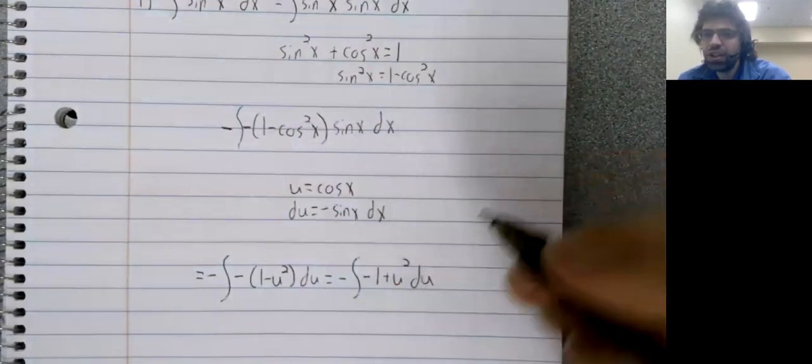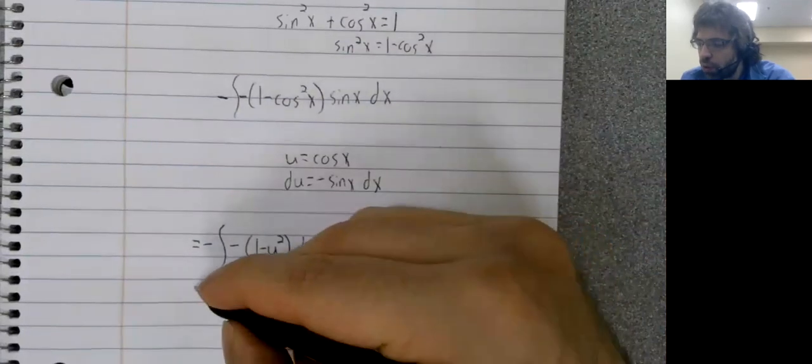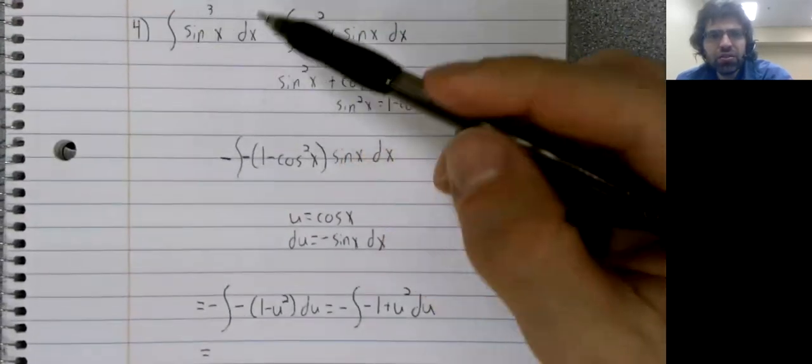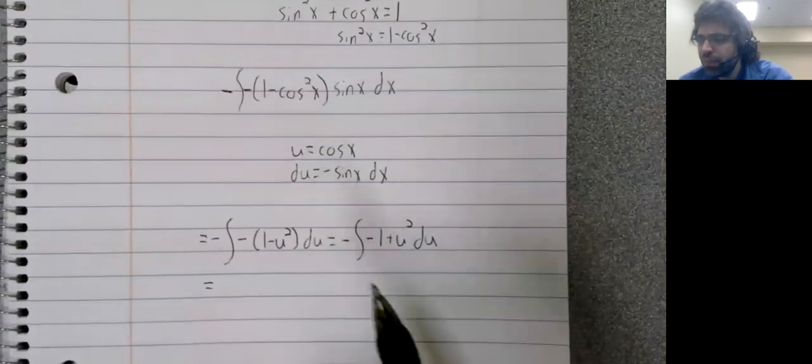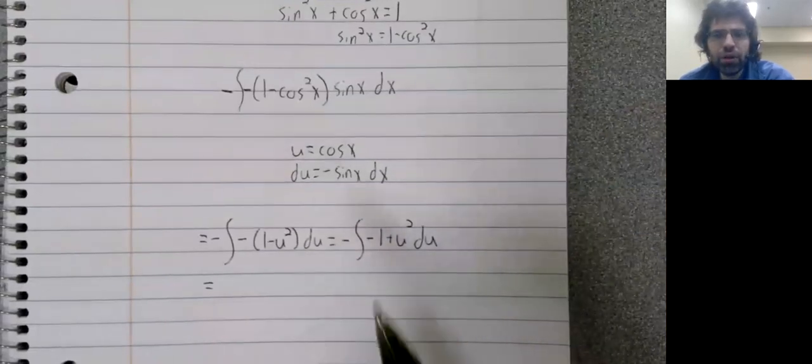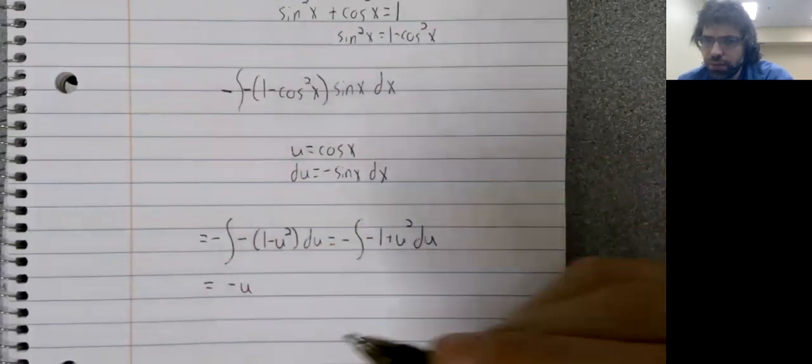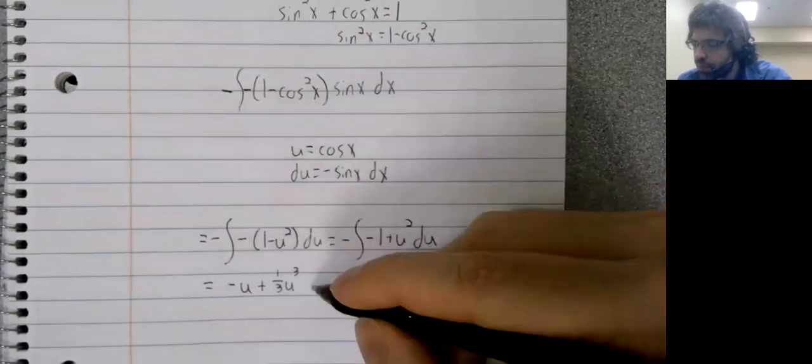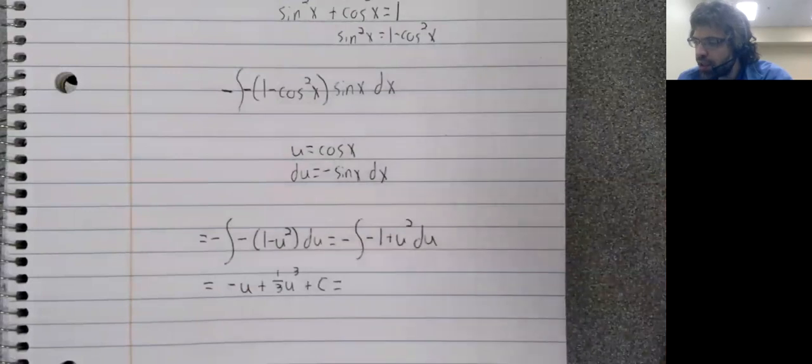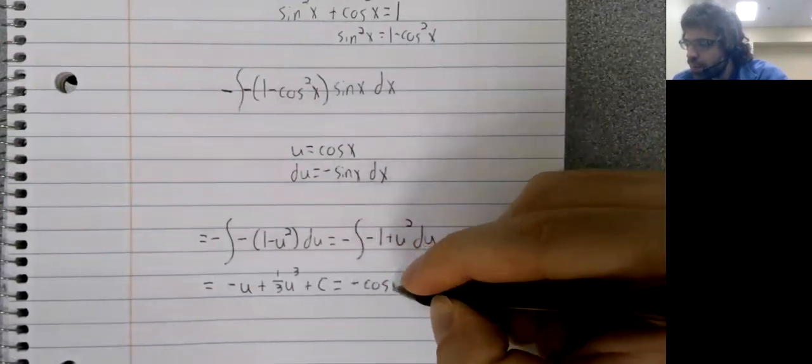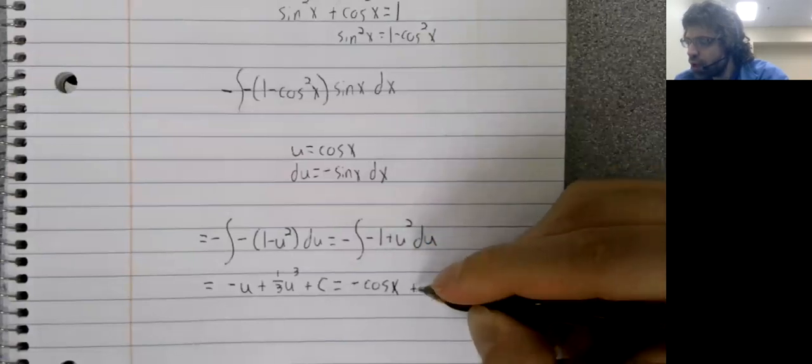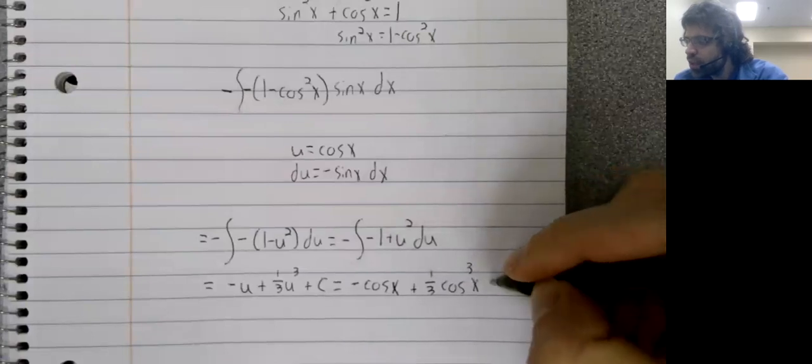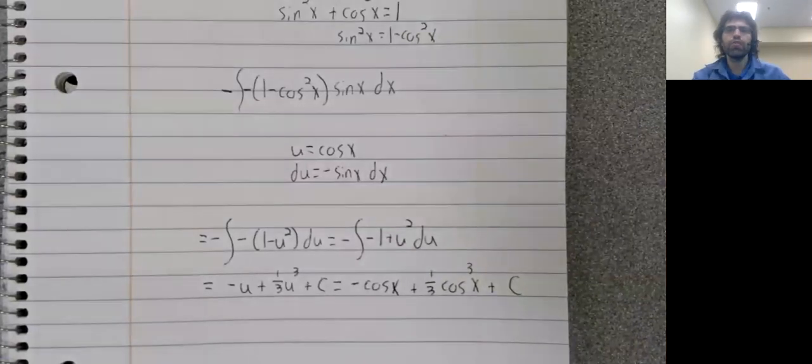Negative the integral of negative one minus U squared DU. And now this is a polynomial. That's the point of section 8.2. It's to take these powers and rewrite them so we have a polynomial of U. And then we convert back to our variable. U is the cosine of X.